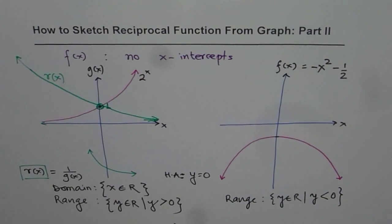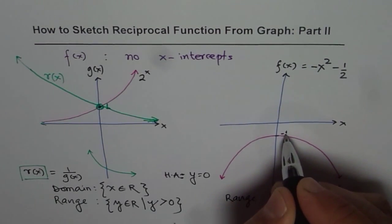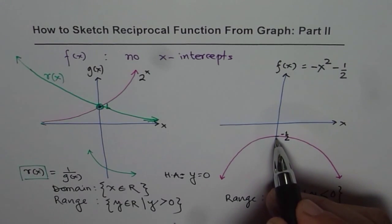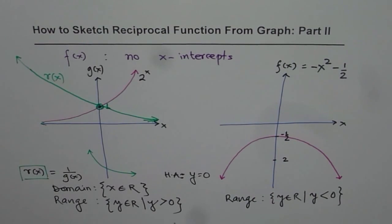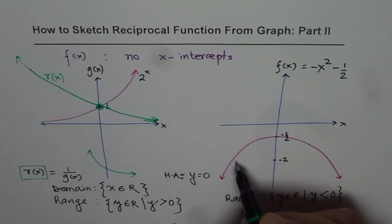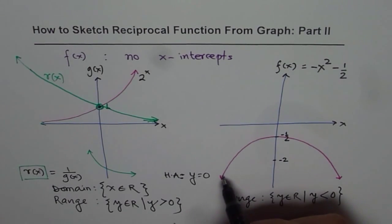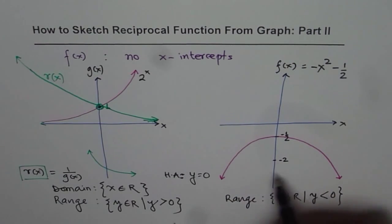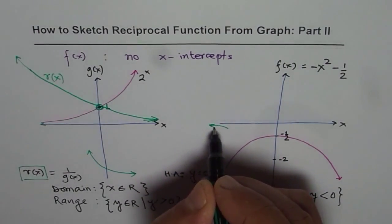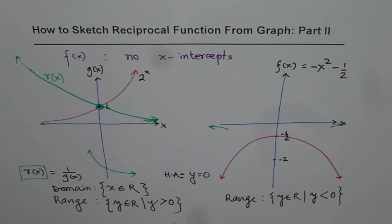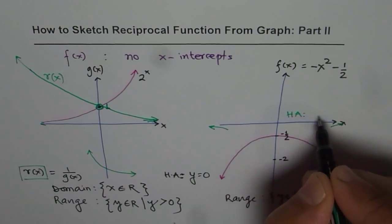Now let us look at the second example. Since I have taken the function as minus x squared minus one half, the vertex point is minus one half. The reciprocal of minus one half is minus 2, so that point maps to minus 2 on the reciprocal graph. Going through the properties, if the x value is negatively large, the y value is negatively large for this function, so the reciprocal will be negative but approaching 0 on both sides. Both sides go negative, meaning both sides should approach 0, consistent with horizontal asymptote y equals 0.